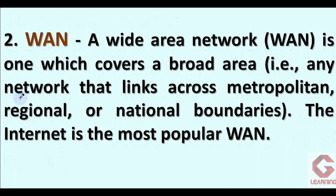A wide area network is the largest computer network in terms of geographical area. A WAN covers a broad area — any network that links across metropolitan, regional, or national boundaries. It includes connecting computer networks of two different cities, states, or countries. The internet is the most popular example of a wide area network.